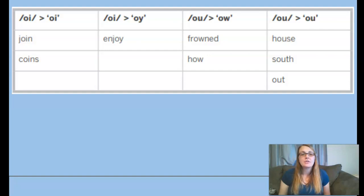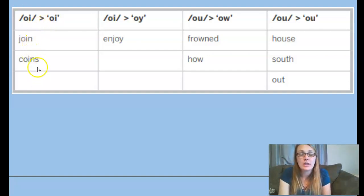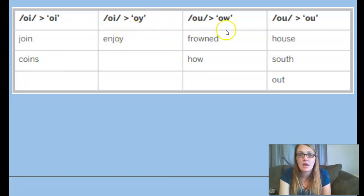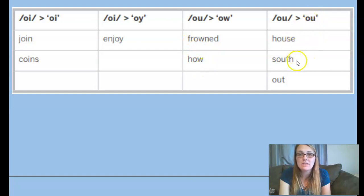You'll see these words in the story. The OI words: oi, join, and coins. OY: enjoy. Our OW words: ow, frown, and how. And OU: house, south, and out.